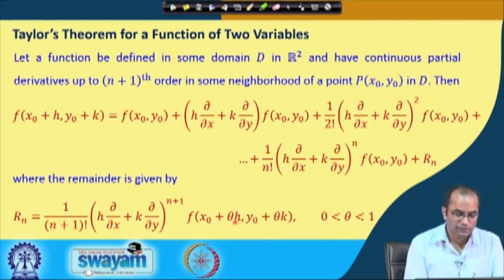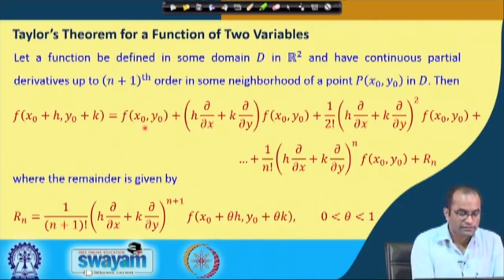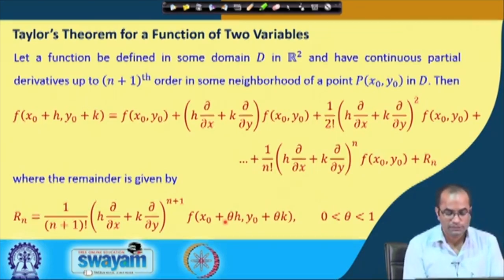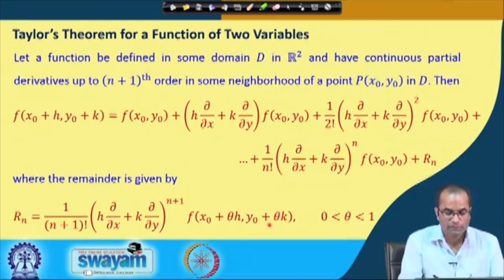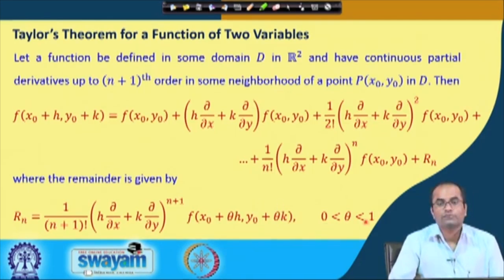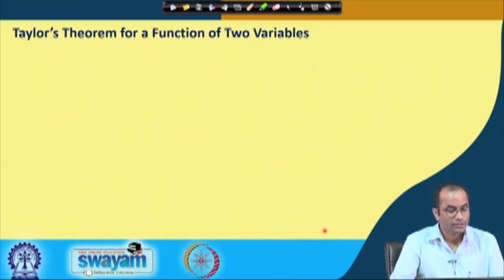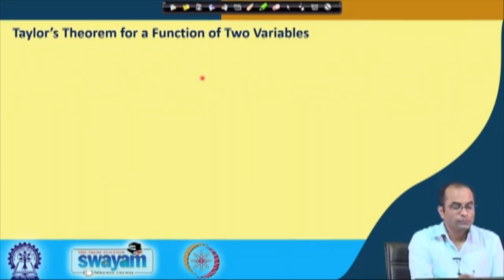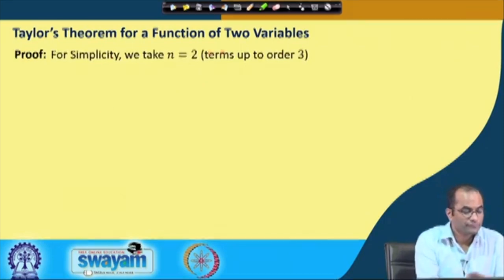The expansion continues with 1/2! times the second-order terms, and so on up to the nth order. The remainder term involves the (n+1)th-order partial derivatives evaluated at (x₀+θh, y₀+θk) where θ is between 0 and 1. This means the first argument varies from x₀ to x₀+h and the second from y₀ to y₀+k as θ varies from 0 to 1.